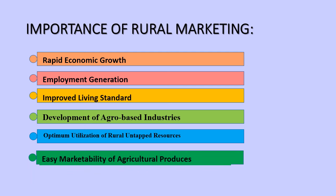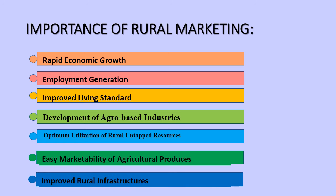Next is easy marketability of agricultural produce. Rural marketing provides the opportunity to sell in wholesale markets or bigger industries at higher rates, rather than just selling at local markets. Last but not the least is improved rural infrastructure. The growth of rural marketing will lead to improved transportation, communication, banking, and other facilities, which will ultimately help reach target markets in rural areas. There are various other importances from a societal, entrepreneurial, or rural people's point of view, but these are the most directly visible ones.